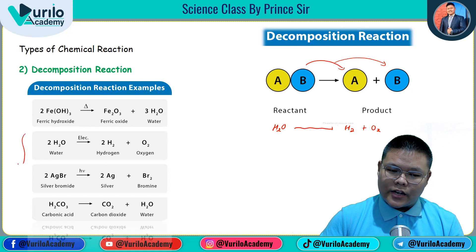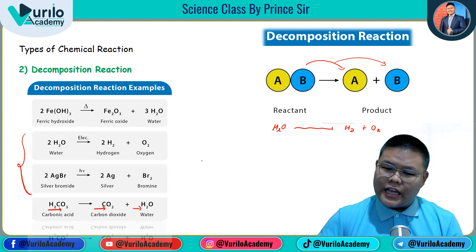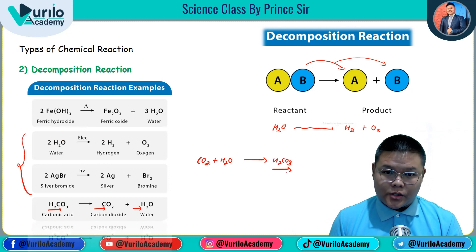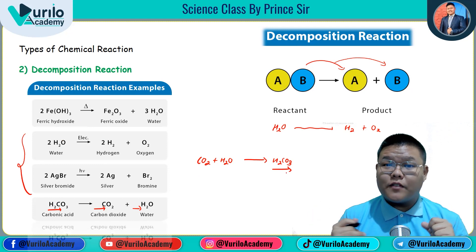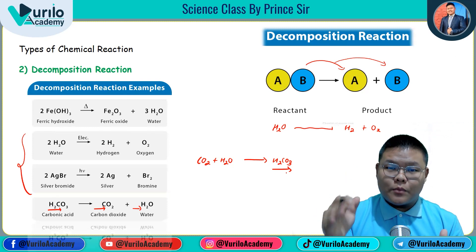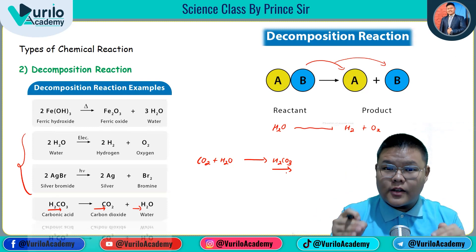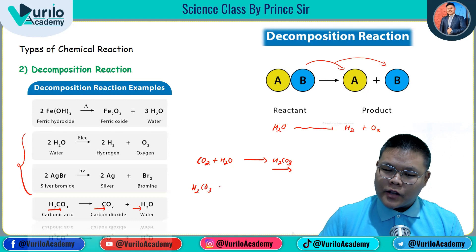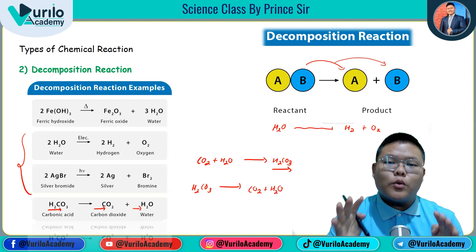This example is a decomposition reaction. Another example: H2CO3 gives CO2 plus H2O. We have reactions involving CO2 and H2CO3. We have carbonic acid H2CO3. CO2 and H2O combine to form carbonic acid — this is a synthesis or combination reaction. In the reverse direction, H2CO3 decomposes to give CO2 plus H2O — this is a decomposition reaction.